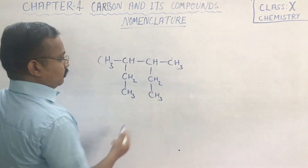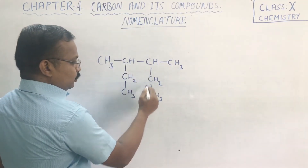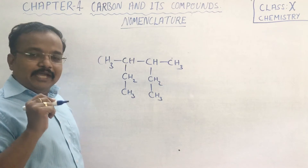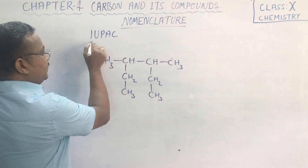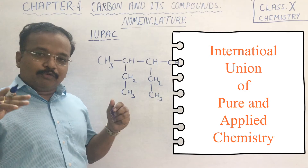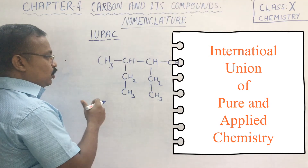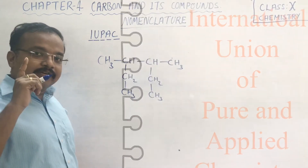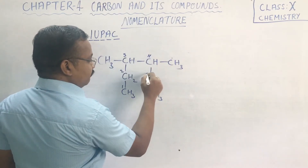Now look at this compound. If you look at the straight chain there are 1, 2, 3, 4 carbon atoms and two branching areas. But according to the rules of IUPAC nomenclature — IUPAC means the International Union for Pure and Applied Chemistry — we have to find the longest continuous chain. If you go this way: 1, 2, 3, 4, 5, 6, this becomes the longest chain.